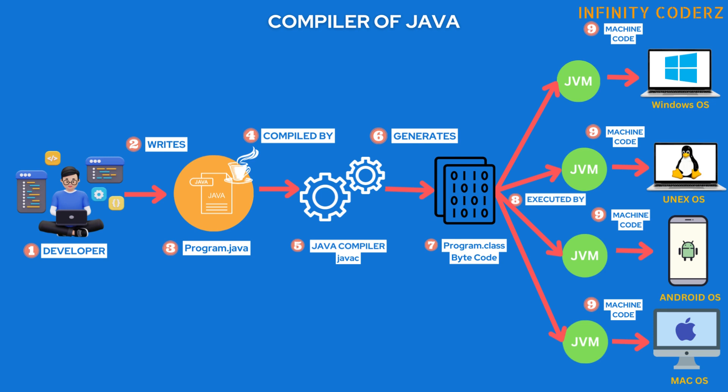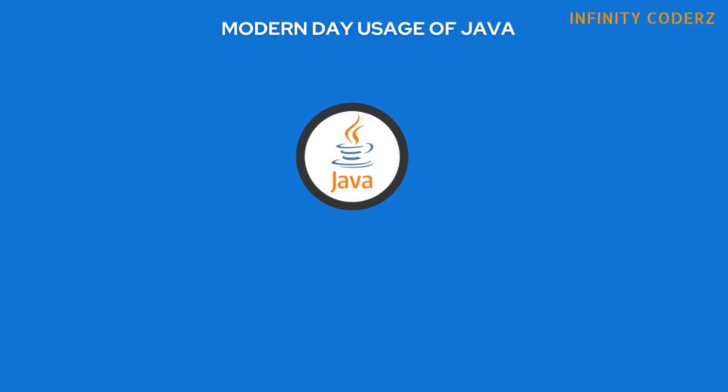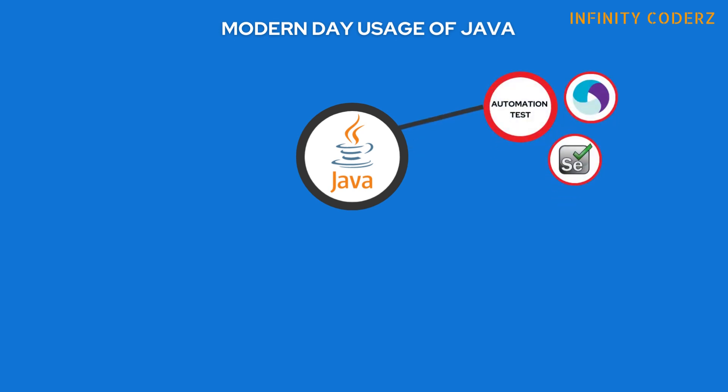Moving on, let's look into how Java is used today. Java has become the backbone of numerous applications and systems we use every day, from web development to mobile apps and even large-scale enterprise software. Java has proven its reliability and scalability time and time again. Automation testing: Java is widely used for writing automation tests, thanks to its rich ecosystem of testing frameworks and libraries. One popular example is Selenium, a framework for automating web browsers.